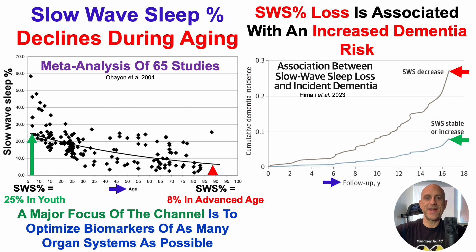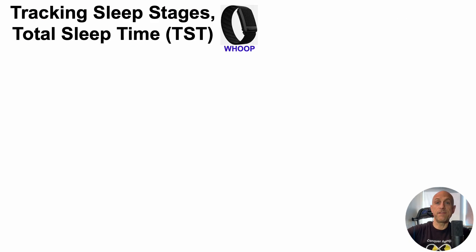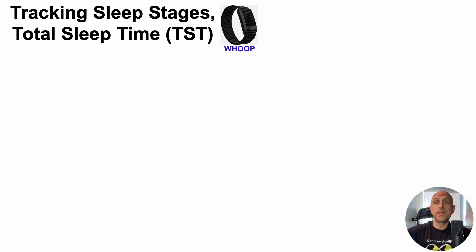A major focus of this channel is to optimize biomarkers of as many organ systems as possible. Slow wave sleep percentage can be tracked using fitness trackers. I'll show Whoop data compared against polysomnography (PSG), which is the gold standard for sleep studies. I'm not here to promote Whoop — if there are other fitness trackers like Oura, Apple Watch, Garmin, or Fitbit that have been compared against PSG for quantifying individual sleep stages, please post those papers in the comments.